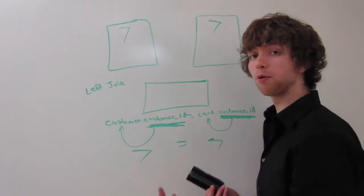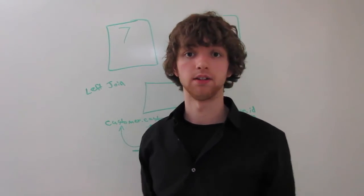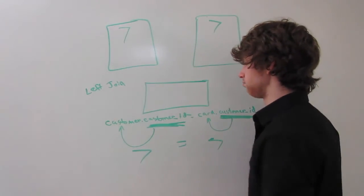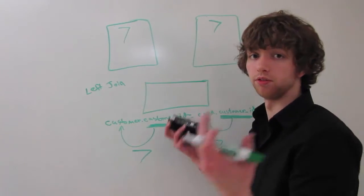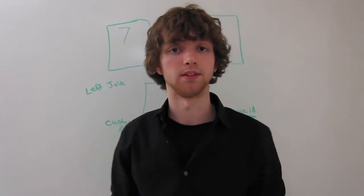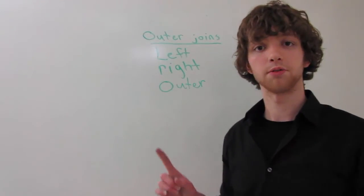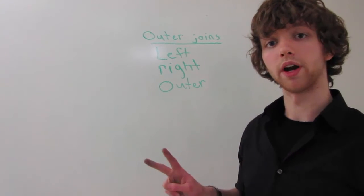But with an outer join, we are going to ignore that and basically return all of the rows for either the left or right side. So there are three main classifications of outer joins: a left outer join, a right outer join, and a full outer join.